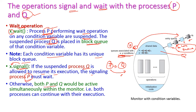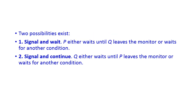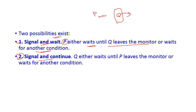If both P and Q were active simultaneously, we would get a problem since both processes can continue with their execution. Here two possibilities exist: first, signal and wait — where process P either waits until Q leaves the monitor; and second, signal and continue — where Q either waits until P leaves the monitor. Initially P is in the monitor, then Q will wait until P leaves the monitor.